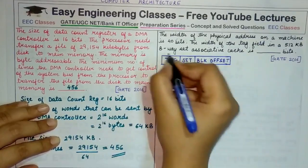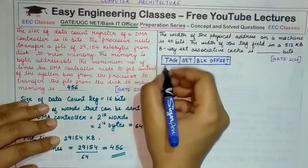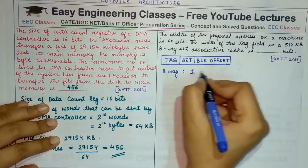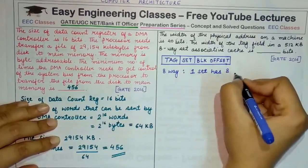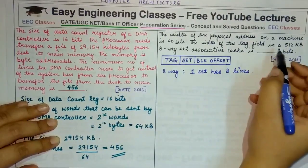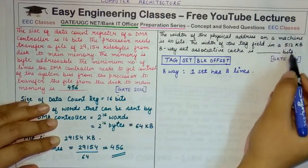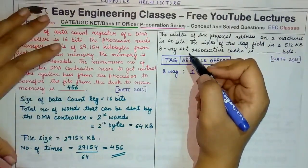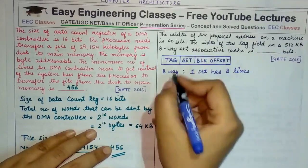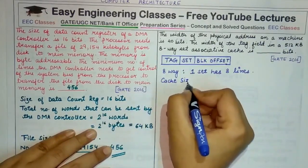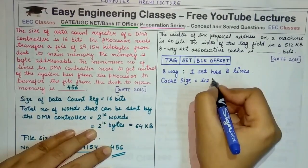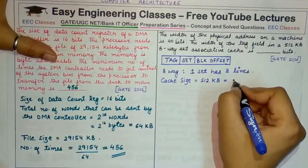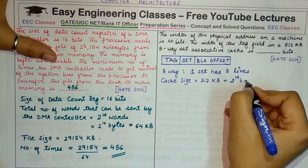It is an 8-way set-associative cache, meaning one set has 8 cache lines. The cache size is 512 KB and the physical address is 40 bits. Writing 512 KB as a power of 2: 512 KB equals 2 raised to power 19 bytes. Since the physical address is 40 bits, the size of the main memory is 2 raised to power 40.